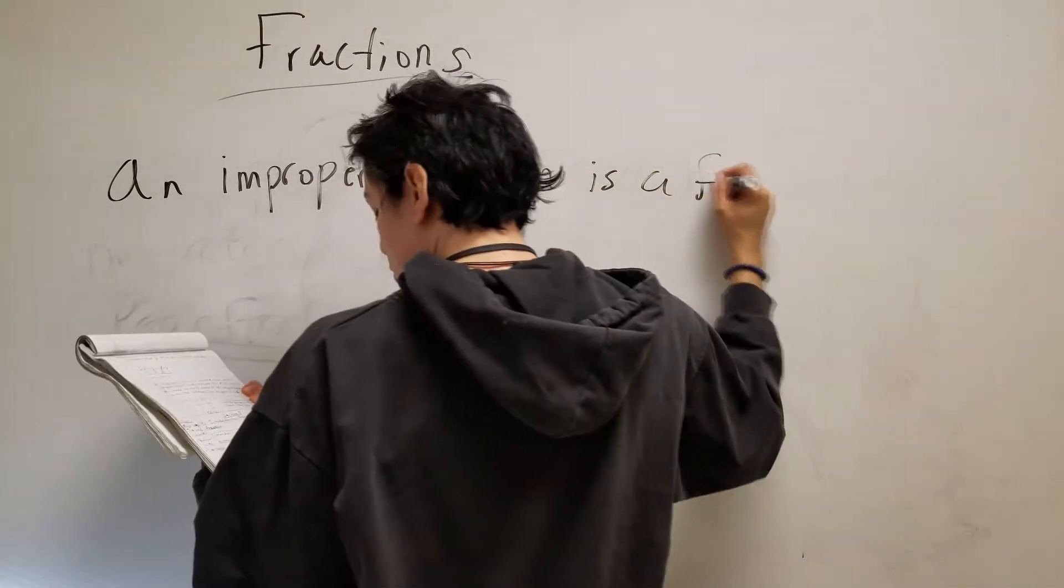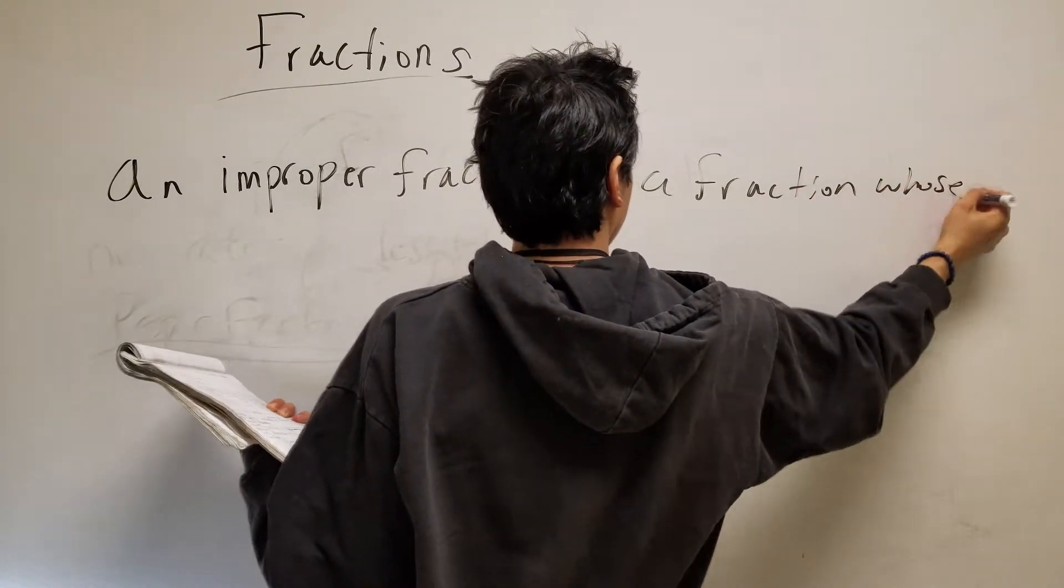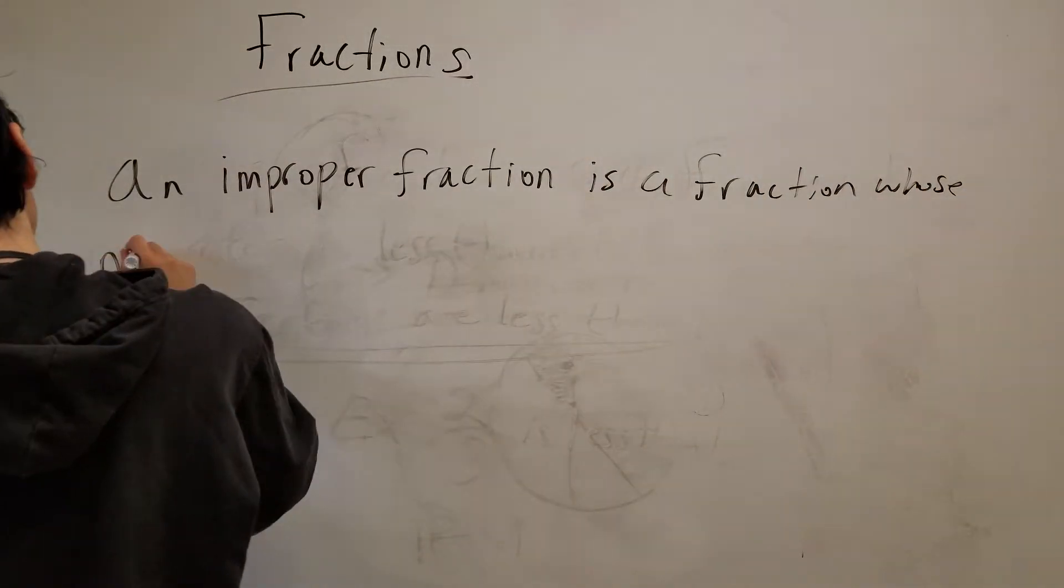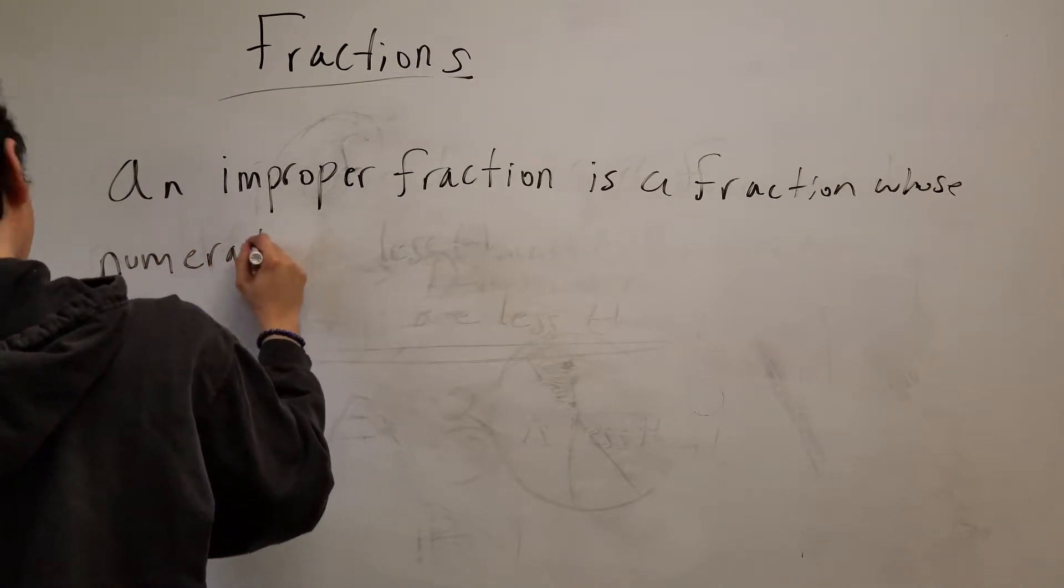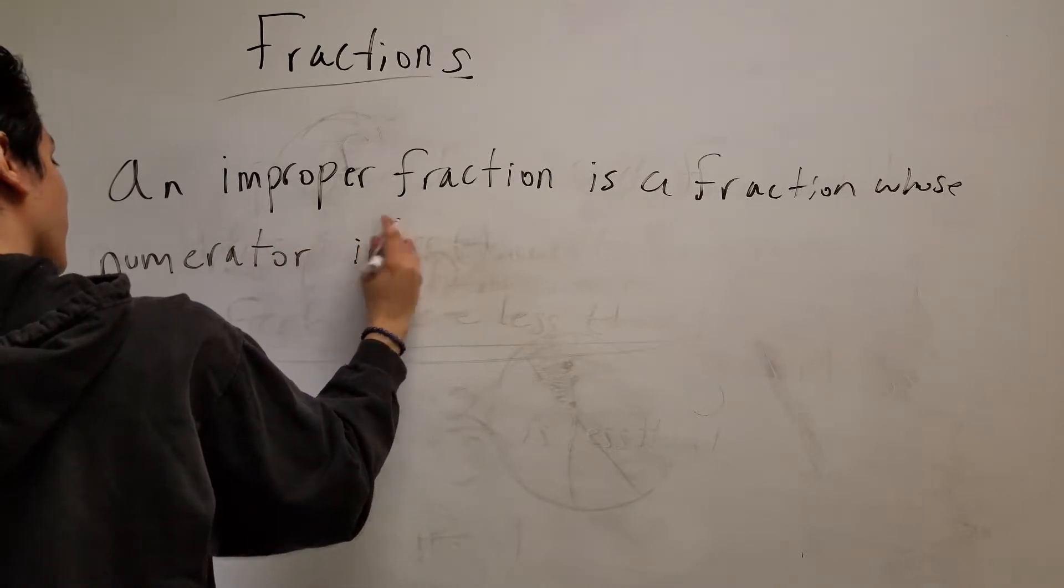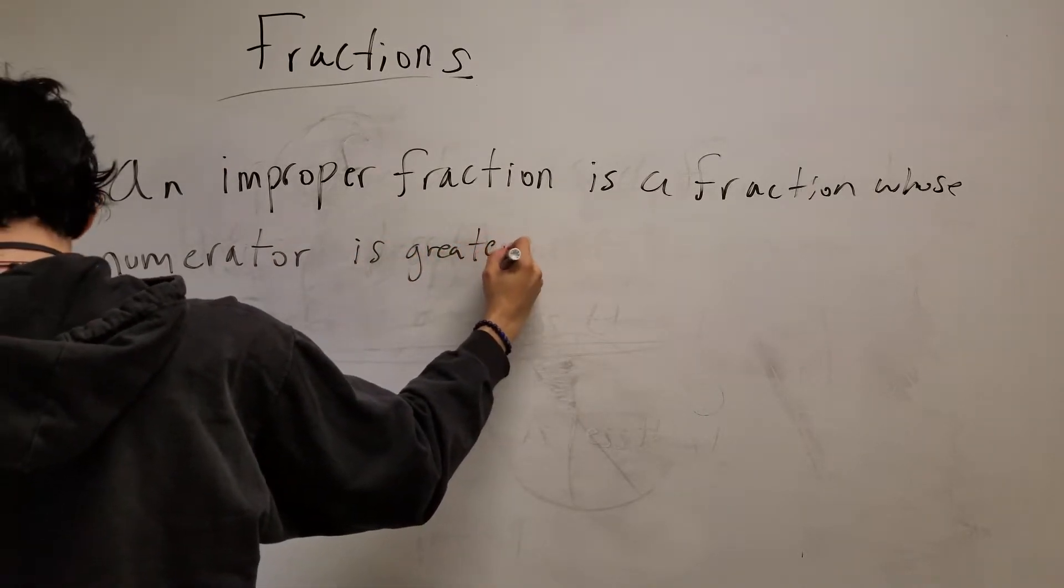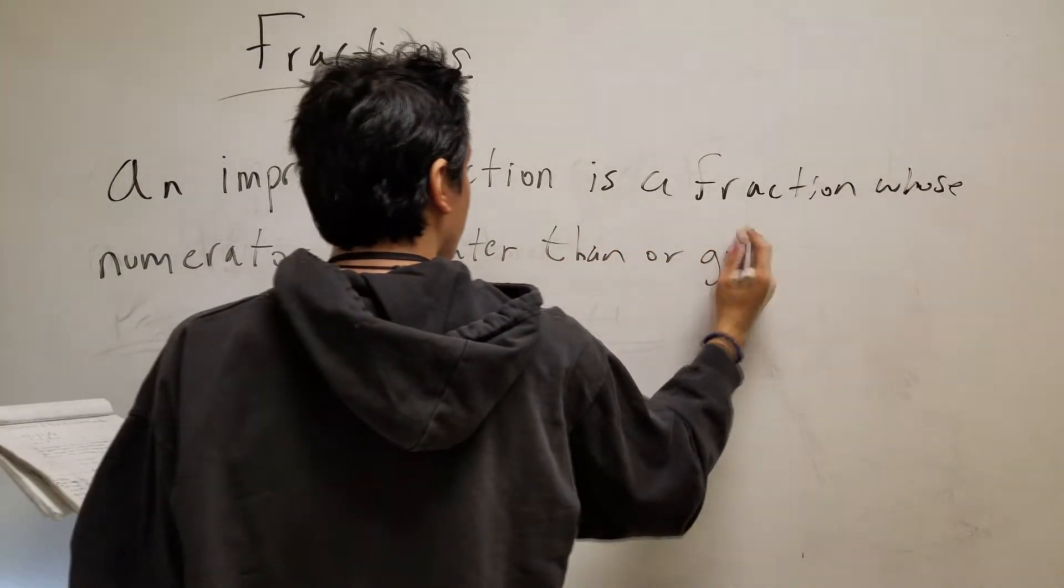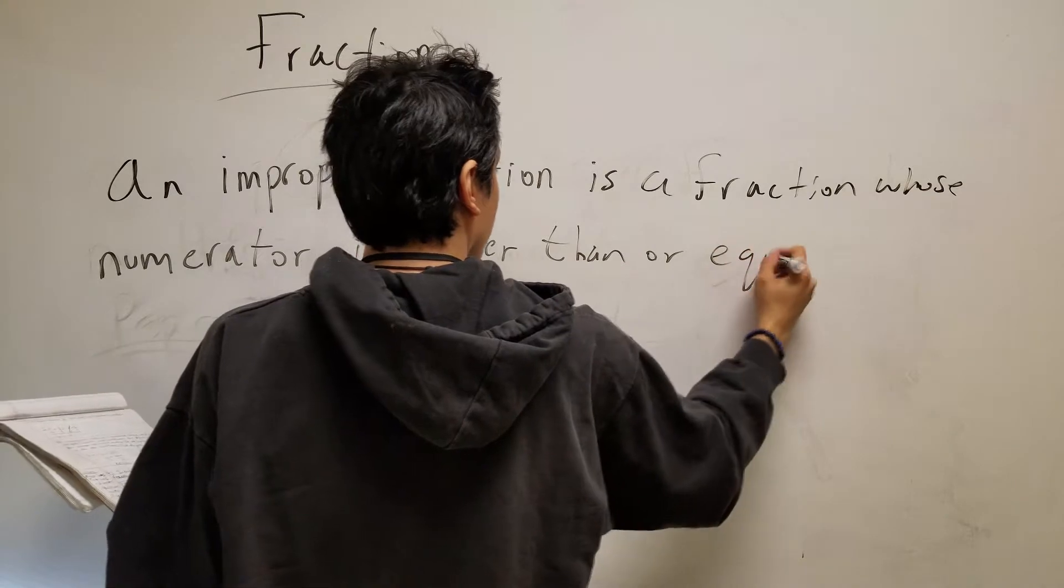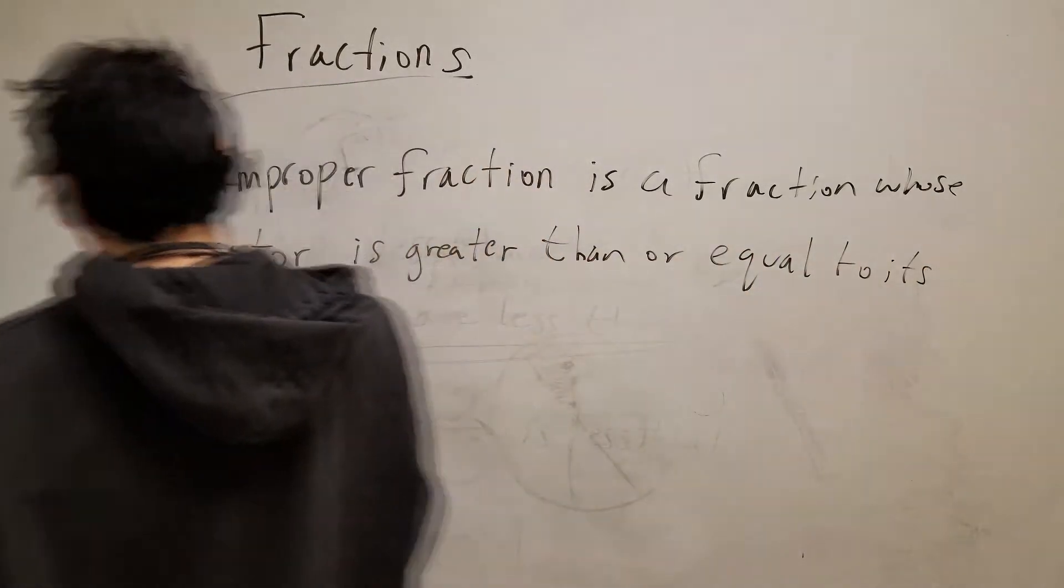An improper fraction is a fraction whose numerator is greater than or equal to its denominator.